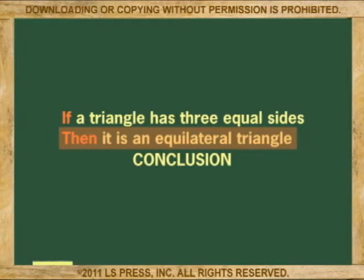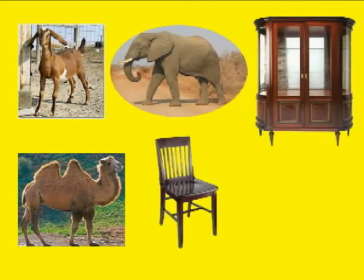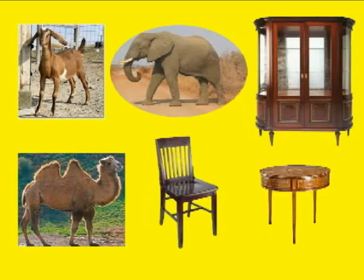An example of an invalid hypothesis would be: if it has four legs, then it is a table. It is an invalid hypothesis because a lot of living things and inanimate objects have four legs. Besides, a table could also have three legs.